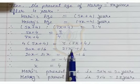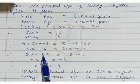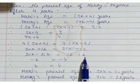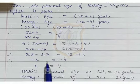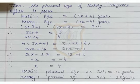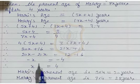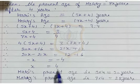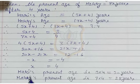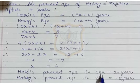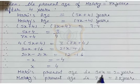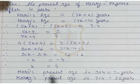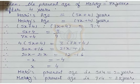We shift 21x from the right hand side to the left hand side, and 16 from the left hand side to the right hand side. So we get minus x equals minus 4. Since minus is on both sides, we can write x equals 4. Hari's present age is 5x, and x is 4, so 5 times 4 equals 20 years. So Hari's present age is 20 years and Harry's present age is 28 years.